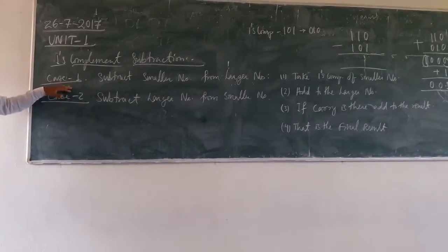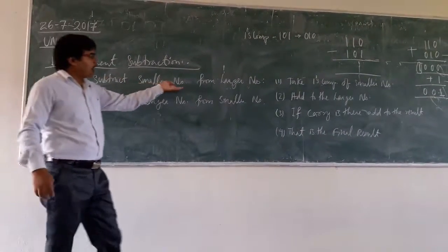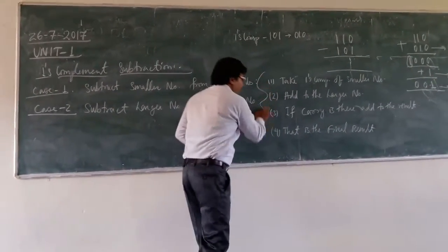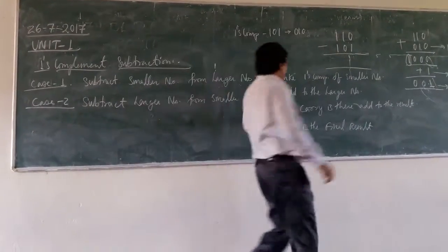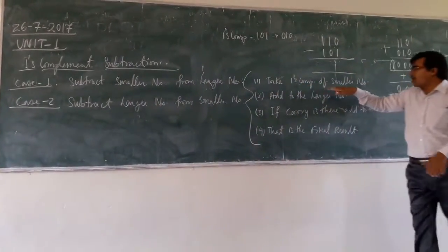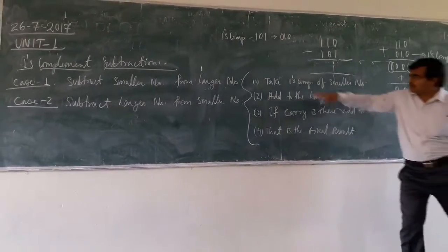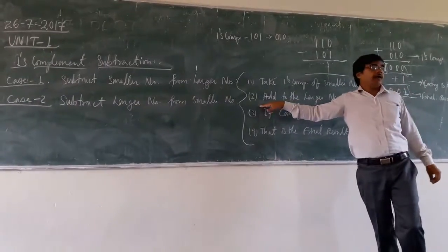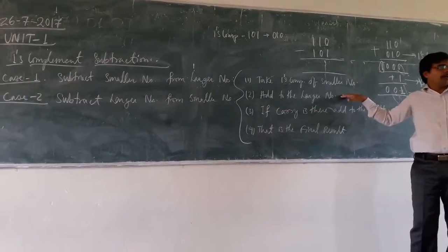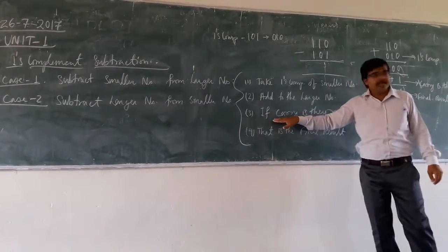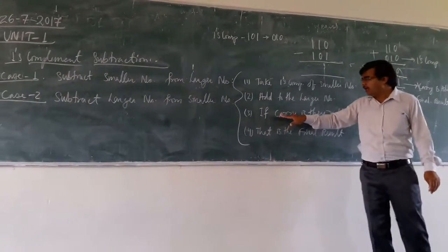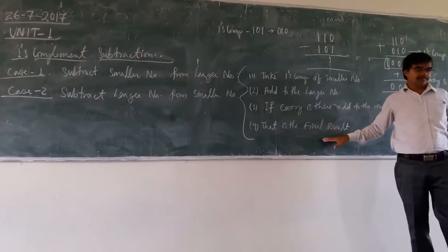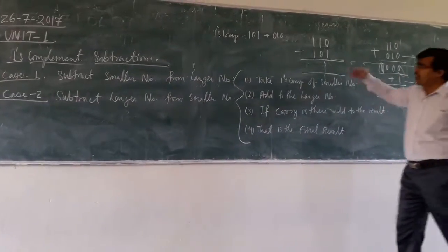Let us start with Case 1: subtract smaller number from larger number. First, we have to take the 1's complement of the smaller number. Then we are adding that 1's complement to the larger number. When we are adding, if there is any carry, we add that carry to the result and that will be the final result.